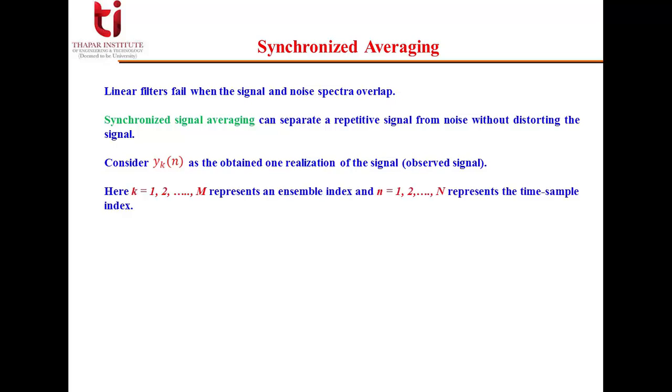Small k represents the realization index, means how many realizations we are taking, that will run from 1 to M. If we are taking M number of realizations we will keep capital M. Similarly, n represents the number of time sample index. So here capital M are the number of realizations, events, or copies we are taking for one particular signal, and N are the number of samples in each signal.